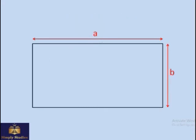If one of the sides is a, another side is b, so the area of the rectangle is a times b.